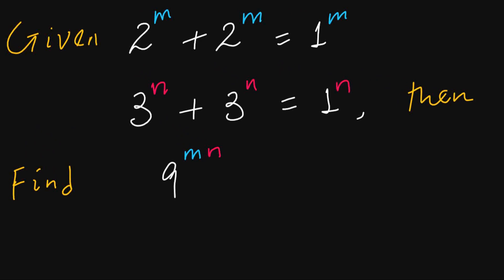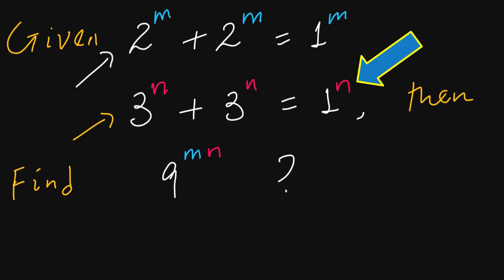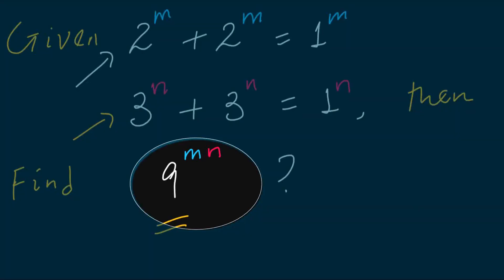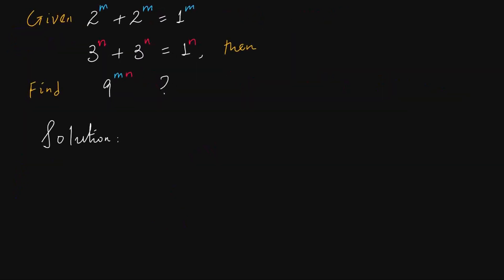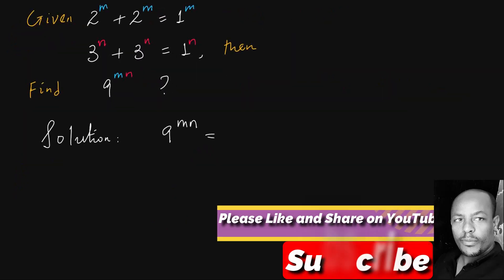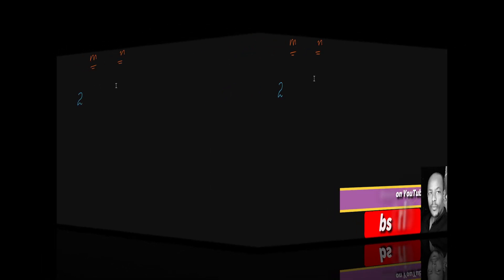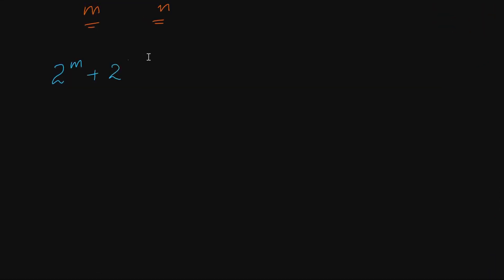This equation is 9 to the power of m times n. If you want to show this equation, 9 equals m equals n, too.